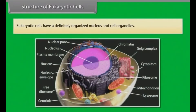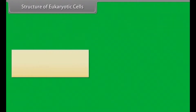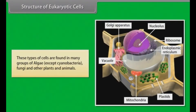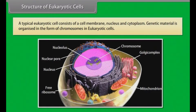Structure of eukaryotic cells. Eukaryotic cells have a definitely organized nucleus and cell organelles. These types of cells are found in many groups of algae, except cyanobacteria, fungi, and other plants and animals.